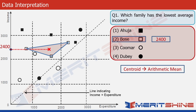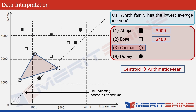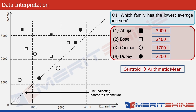Now let's do this for the remaining three families. The Ahuja family's centroid falls around 3000 on the y-axis — that's their approximate average income. The Coomer family's centroid falls around 1700. And the Dube family has just two points, so we take the midpoint of the line, which falls around 2200 on the y-axis. Since these four values are far apart, any approximations won't affect our answer. The Coomer family at 1700 has the lowest average income, so the answer is option three.